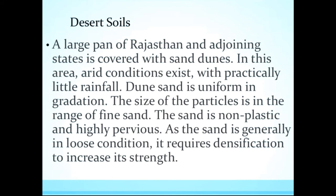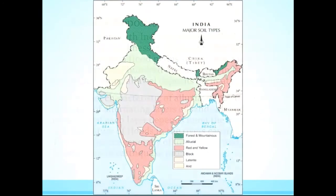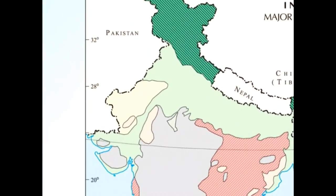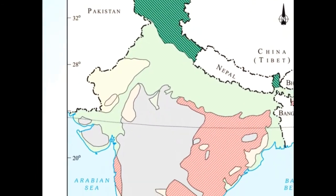Desert soils: a large plain of Rajasthan and adjoining states is covered with sand dunes. Arid conditions exist here with practically very little rainfall. Sand dunes are uniform in gradation, with particle sizes in the range of fine sand. The sand is non-plastic and highly pervious. As the sand is generally in a loose condition, it requires densification to increase its strength.